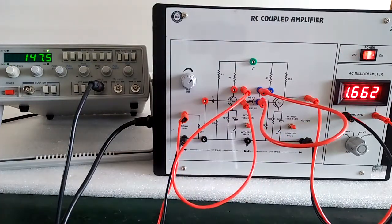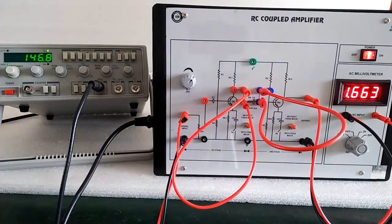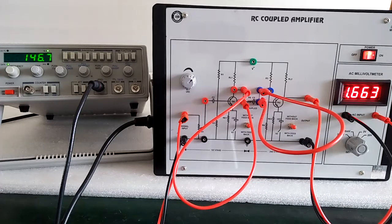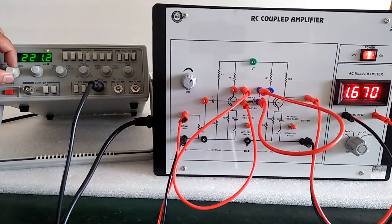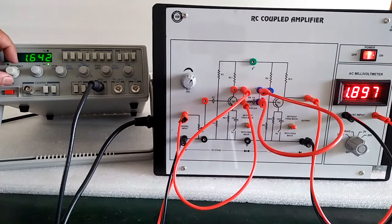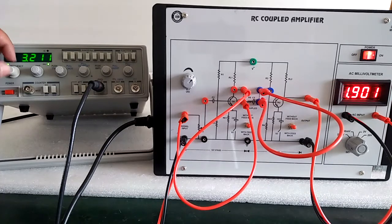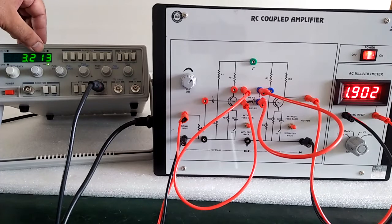Now here we get the more amplification after second stage. And the procedure is the same. Change the frequency, note down the output voltage. Input is fixed. Output upon input and get the gain. And make the graph between gain and the input frequency.